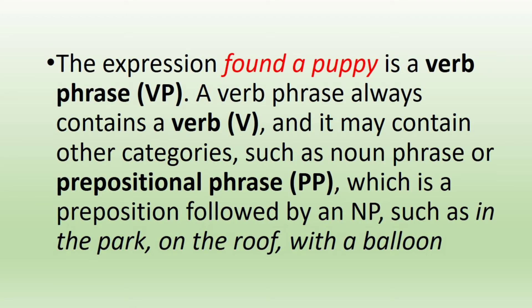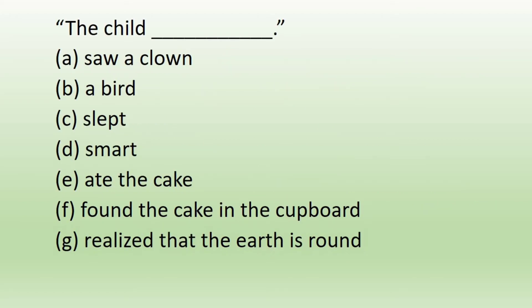There are other syntactic categories. The expression 'found a puppy' is a verb phrase or VP. A verb phrase always contains a verb, V, and it may contain other categories such as noun phrase or prepositional phrase, PP, which is a preposition followed by a noun phrase, such as 'in the park', 'on the roof', 'with a balloon'. The VPs are those phrases that can complete the sentence 'the child ___'. Items A, C, E, F, and G are verb phrases, while B and D result in ungrammatical sentences.